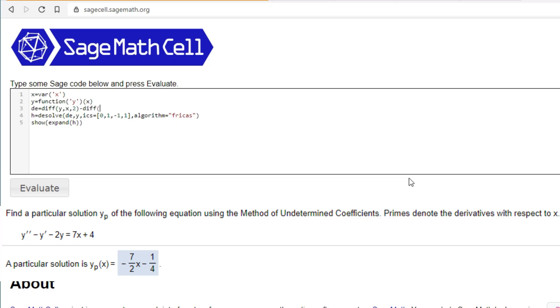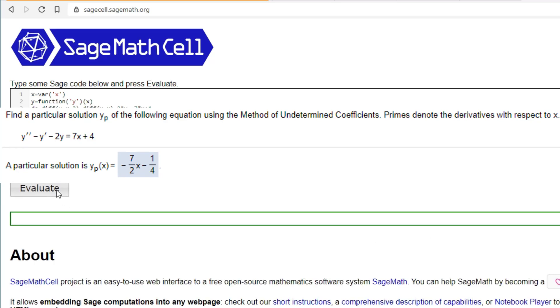Minus diff(y of x) minus 2 times y is equal to 7 times x plus 4. And since there are no initial conditions, we can get rid of that. Hit evaluate.